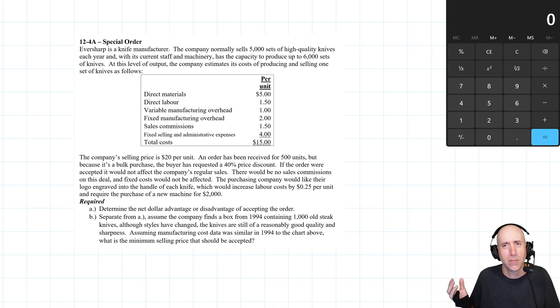Can we serve this client? Is it going to cannibalize our own sales? There's a million non-quantitative aspects to this decision. But we'll look at the quantitative elements of like, should you take the order? And what should you be thinking about? Eversharp is a knife manufacturer. The company normally sells 5,000 sets of high quality knives each year. And with its current staff and machinery has capacity to produce up to 6,000 sets. That's important, right? You'll never take special orders if you're already running at capacity. I'm not going to cut you a special deal. It's like, I'm already sold out. You don't get a volume discount because I already have enough volume. I don't need your extra order. So the fact that we do have extra capacity means we might be open to taking a special order.